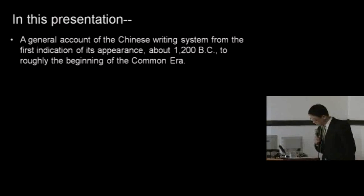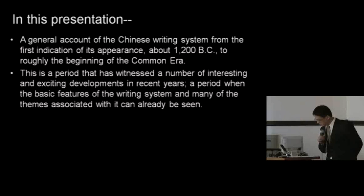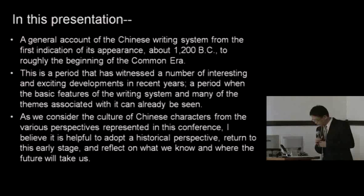What I would like to do in my presentation today is to provide a general account of the Chinese writing system from the first indication of its appearance about 1200 BC to roughly the beginning of the Qin era. This is the period whose study has witnessed a number of interesting and exciting developments in recent years. As we will see in the evidence from this period, the basic features of the writing system and many of the themes associated with it can already be found.